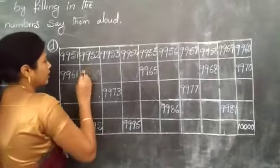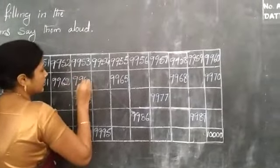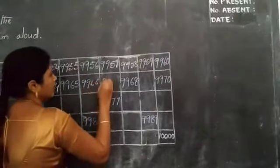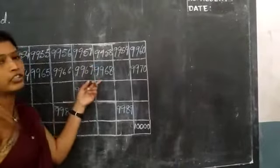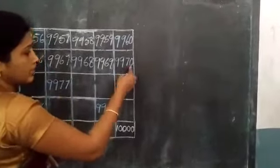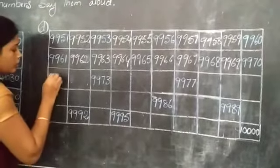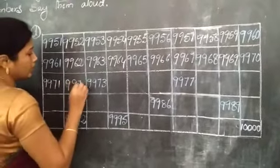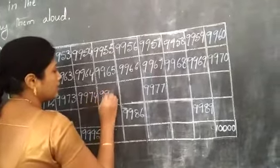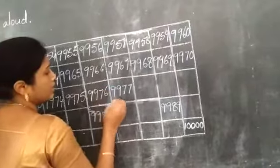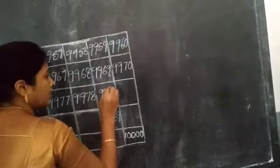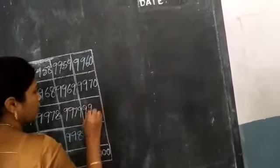Next, 9969. Next, 9970. Next, we have 9971.